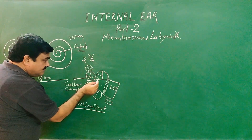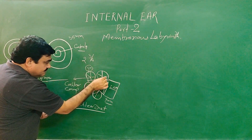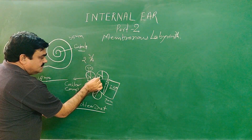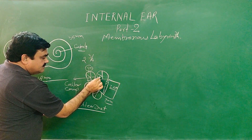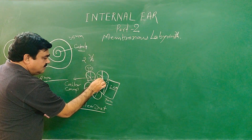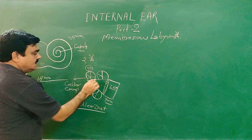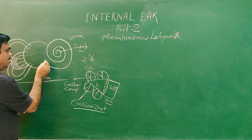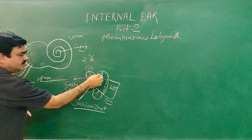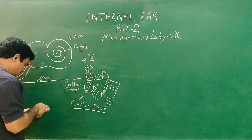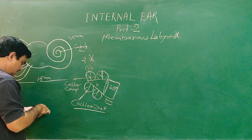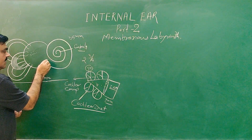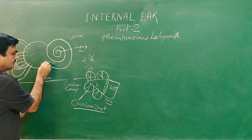The spiral section passes through this level. Here is scala vestibuli, scala tympani, and in between the spiral lamina. The section passes through this level, and here is the position of the cochlear duct. This part is the cochlear duct, so here the cochlear duct is formed.